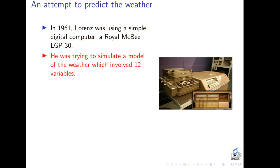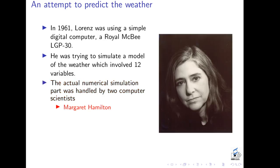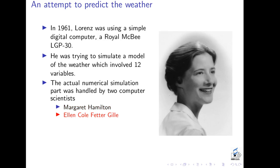What he was trying to do was simulate a model of the weather which involved 12 variables. He later simplified this model by throwing away many of these variables and retaining only three of them. The actual numerical simulation part was handled by two computer scientists, whose role is not emphasized enough in the history of the subject. The first one was Margaret Hamilton, who wrote the initial computer programs for this work and who had to leave for a project later. She trained another computer scientist, Ellen Fetter. It was Ellen Fetter who actually carried out the numerical calculations and graphing that was required for the work where chaos was introduced.